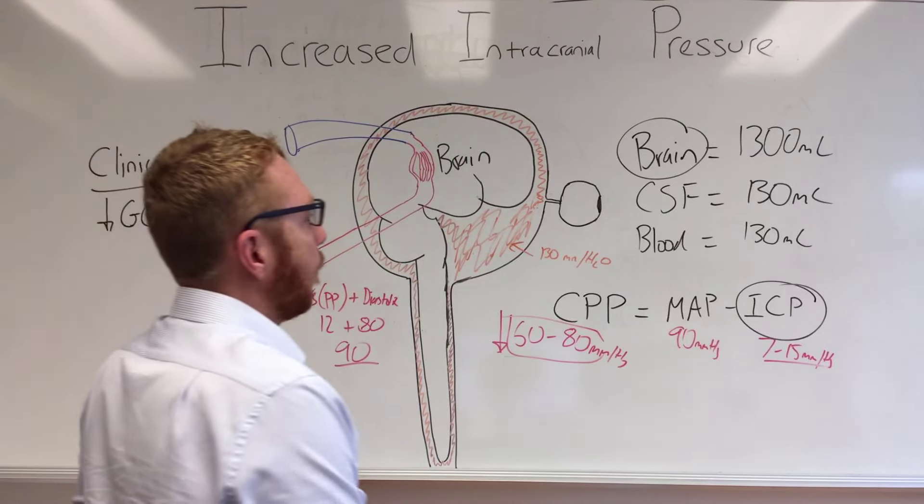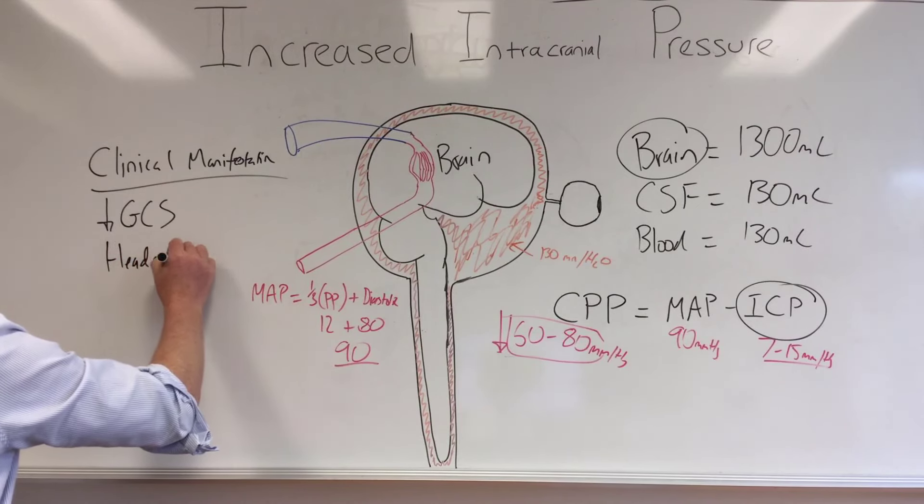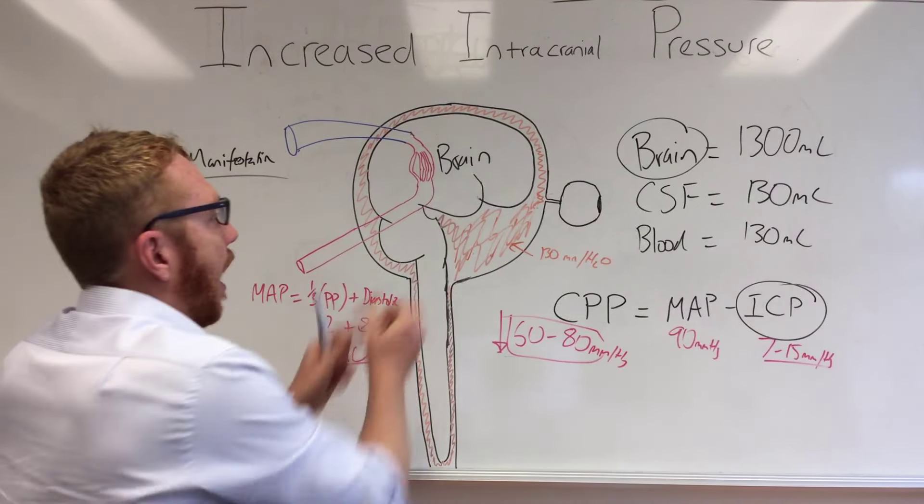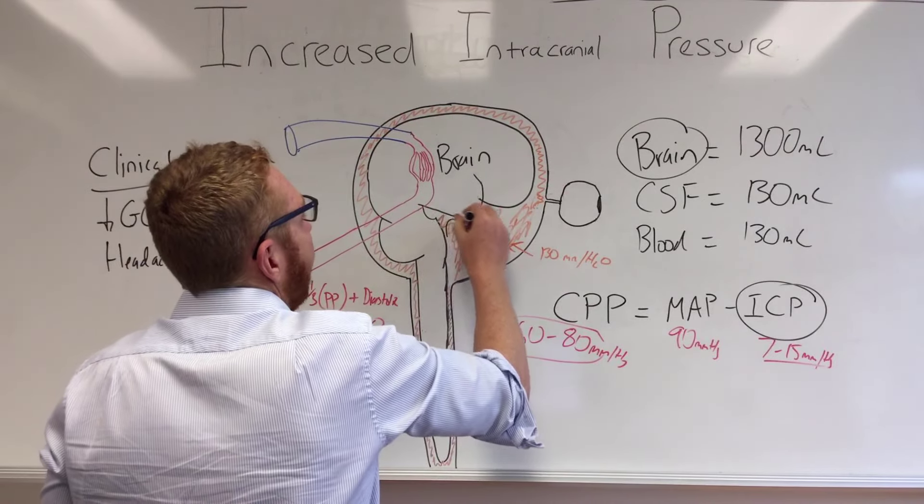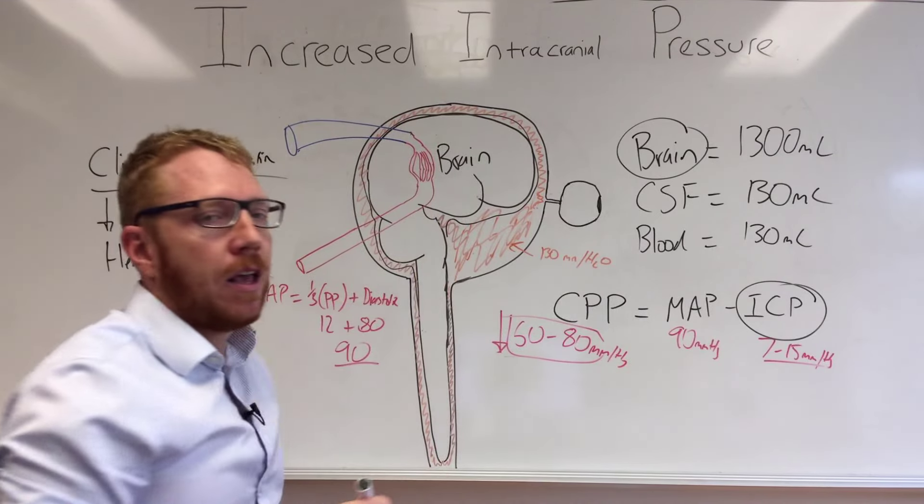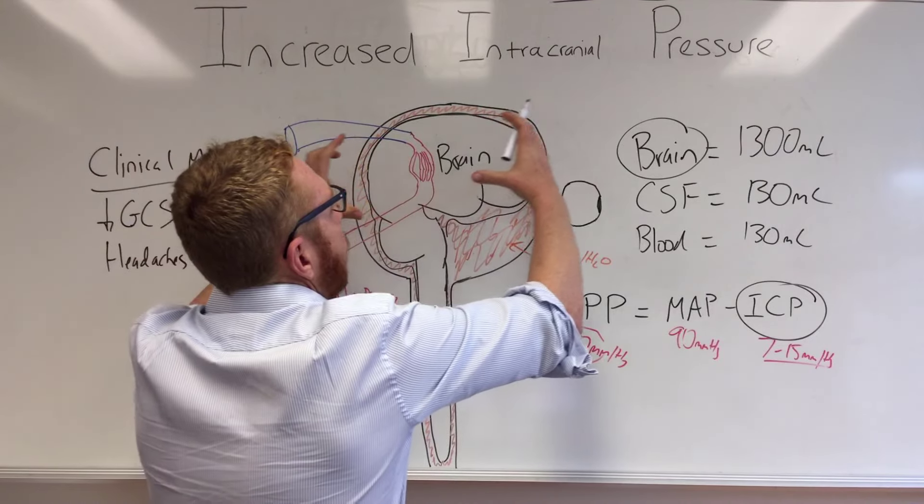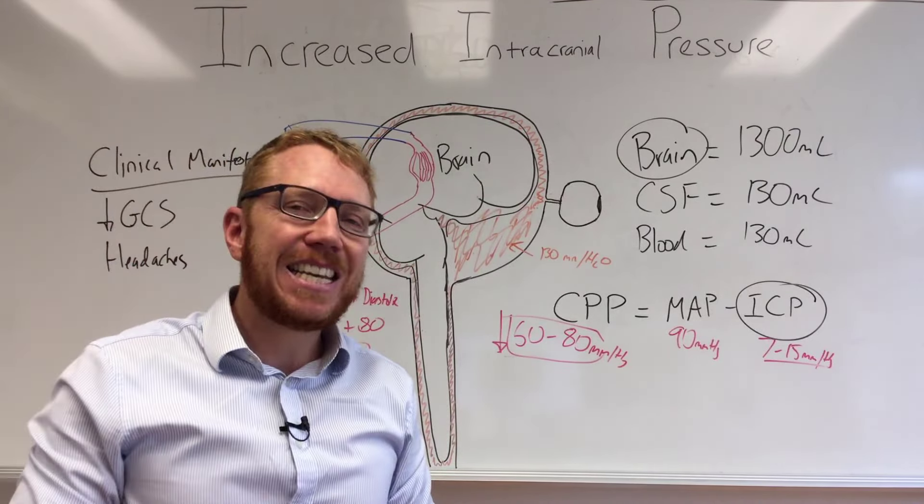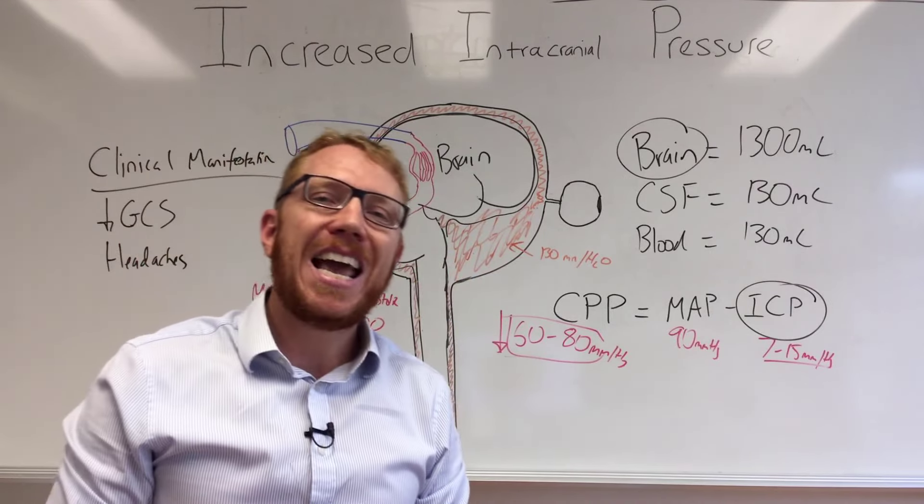The next thing would be headaches. Why would this happen? Well as the pressure increases you've got coverings around the brain, these are your meninges. We've got pia, arachnoid and dura. That would start to get stretched. The meninges are highly sensitive to pain, so that's going to stretch them and cause a headache.